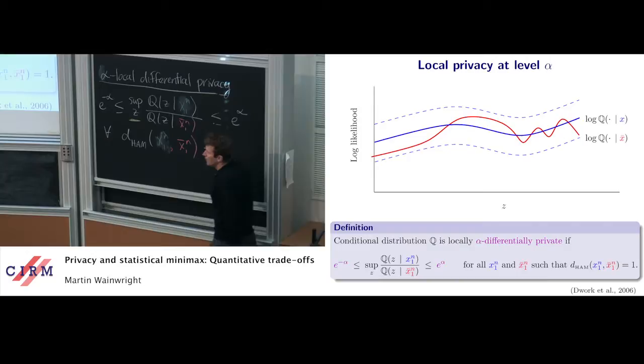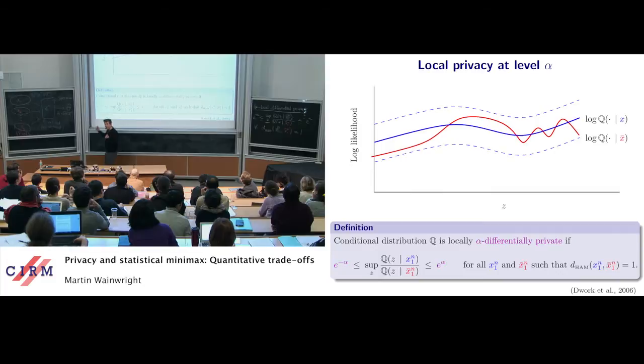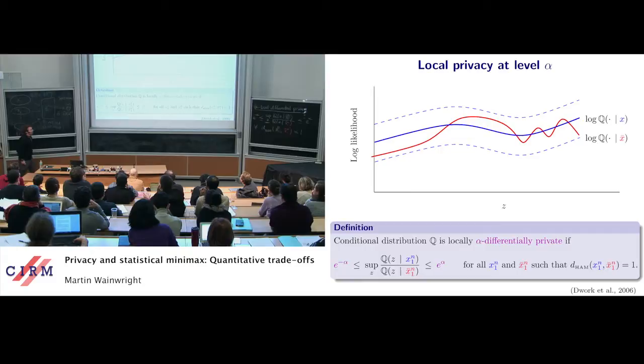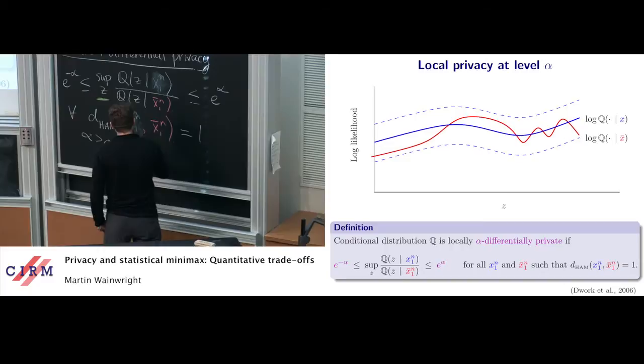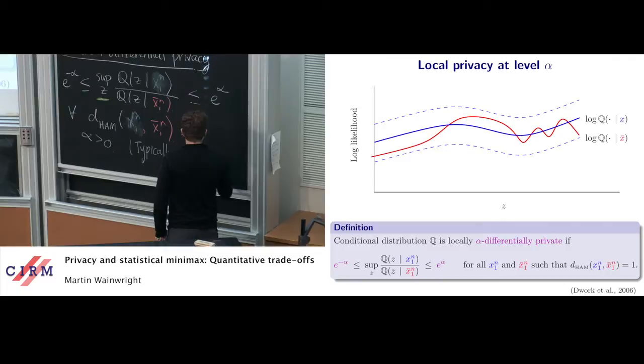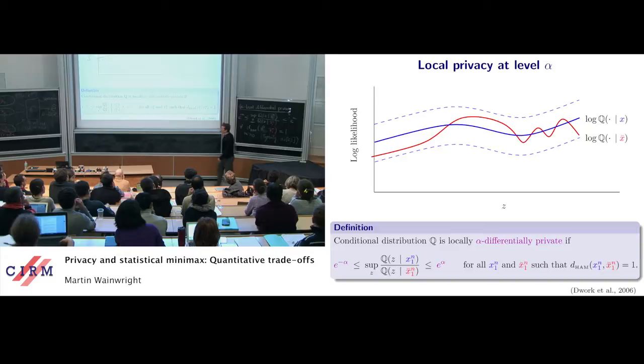The other thing it's uniform in — and this is where the really strong privacy guarantee comes in — is the observed samples. It's uniform over all possible data sets that differ in one coordinate. The way to think about it: you have one data set, you take one individual — that could be you, it could be your HIV status — and flip that point from maybe zero to one. Up to this parameter alpha, I essentially cannot tell much about you by observing the privatized data.